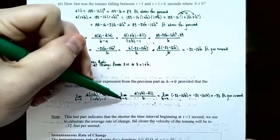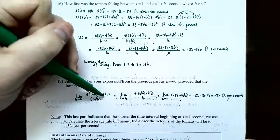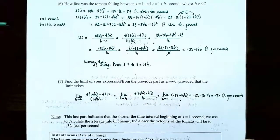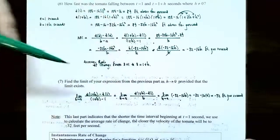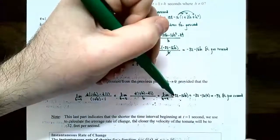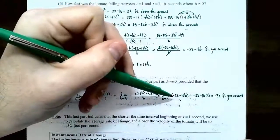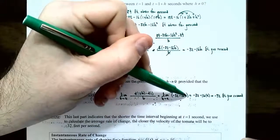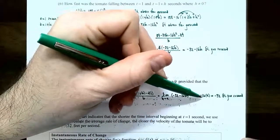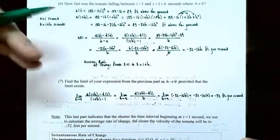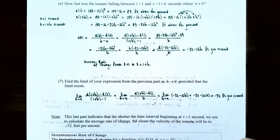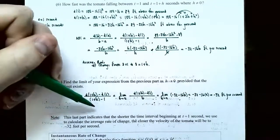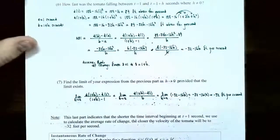We calculated the average rate of change as negative 32 subtract 16h, so we take the limit as h approaches zero of negative 32 minus 16h. Since this is a polynomial function, we can directly substitute h equals zero: negative 32 minus 16 times zero equals negative 32. So the limit of the average velocity as h approaches zero is negative 32 feet per second.